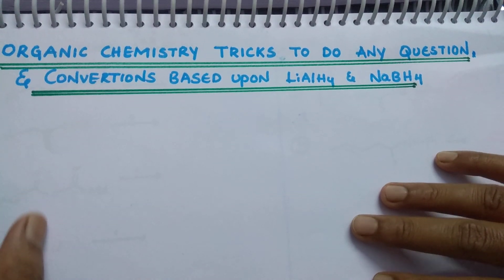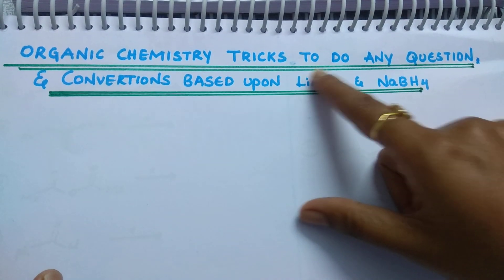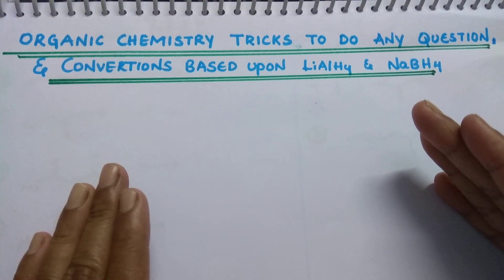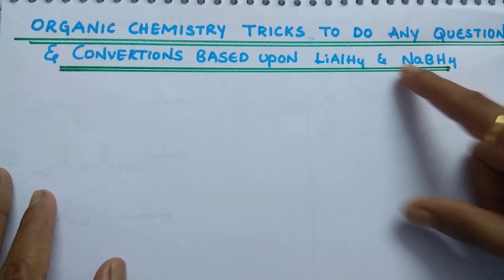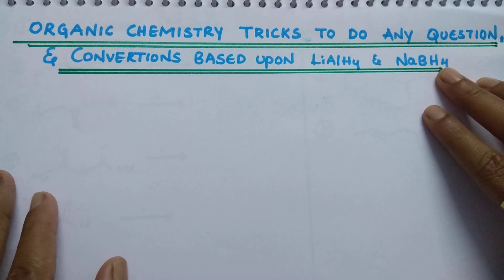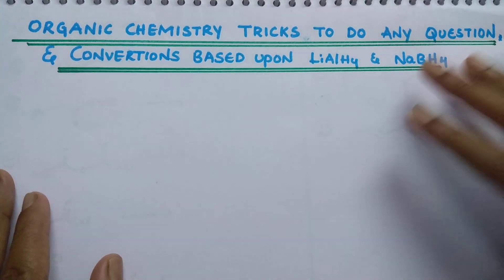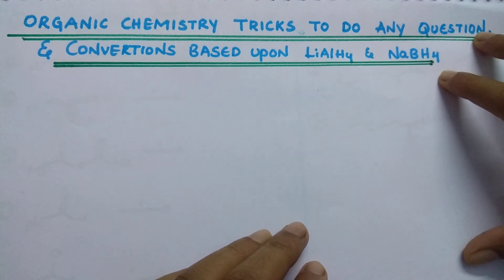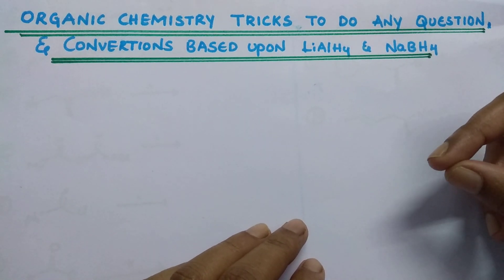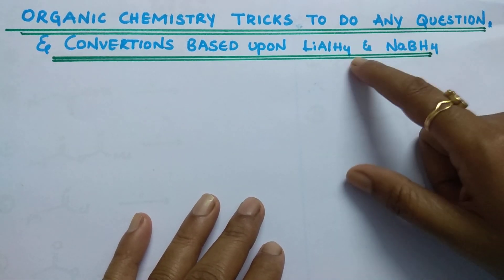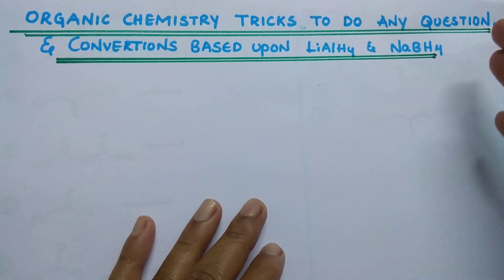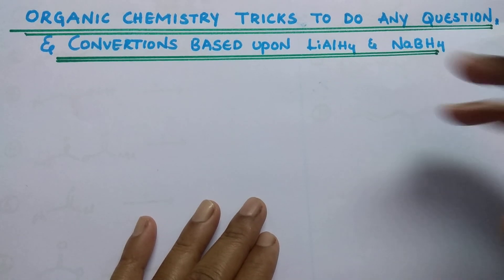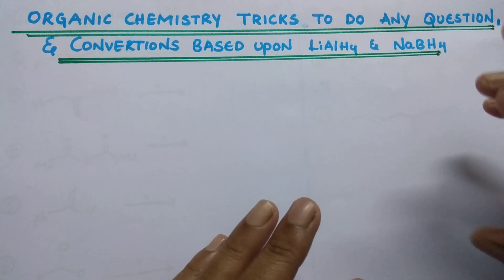Hi students. In this session I am going to discuss organic chemistry tricks to do any questions and conversions based upon lithium aluminium hydride and sodium borohydride. There is no specific chapter in NCERT based on these, but these reducing agents you may observe in almost all the chapters. If you watch this video up to the end, then next time you will never miss a question based upon these reagents.